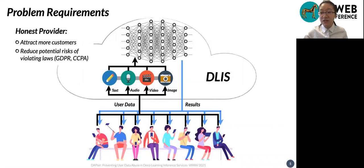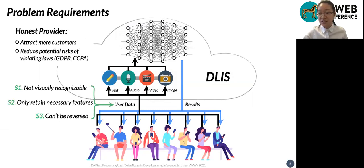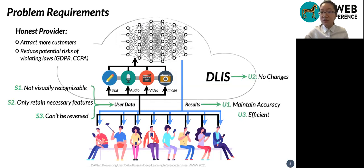Subscribers want their data to be only used in their paid service and for their best interests. They feel taken advantage of if their data may be secretly utilized in training new deep learning inference service models. Meanwhile, an honest web service provider is also willing to demonstrate that their services are free of data abuse risks. We want to help the honest provider achieve their goal. The security goal is to greatly reduce the possibility that data sent by users can be labeled. It consists of three sub-goals: data should not be visually recognizable; data should only retain features necessary to the subscribed service; and the security applied on data cannot be reversed. Besides security, we also want to achieve three sub-goals of high usability: good inference accuracy is maintained, there is no change in the backend including the model architecture, and execution time on mobile devices is suitable for online services.